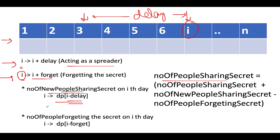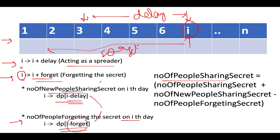Now for the second equation: the number of people forgetting the secret on day i is equal to DP[i minus forget]. So you go back in the past, and the number of people who will find the secret on day i equals the number of people currently sharing the secret, plus the number of new people sharing the secret (DP[i minus delay]), minus the number of people forgetting the secret (DP[i minus forget]). Those forgetting are subtracted because they stop spreading — this is the crux of the problem.